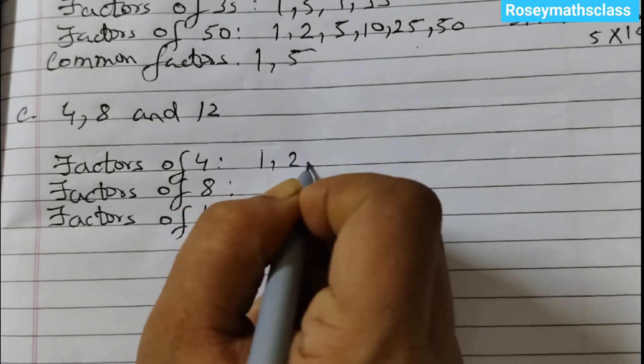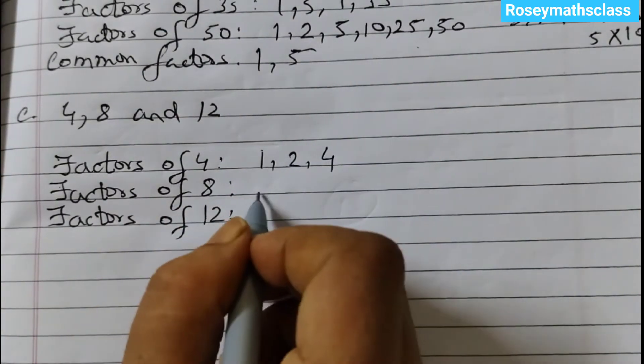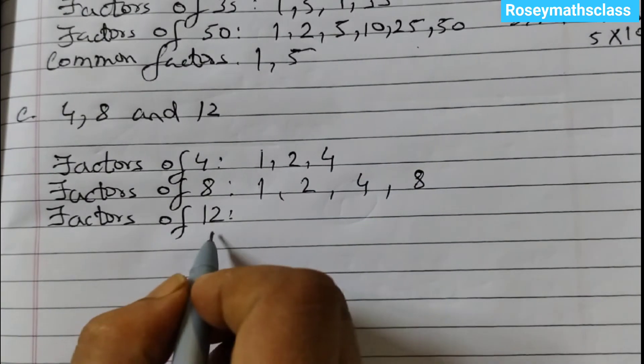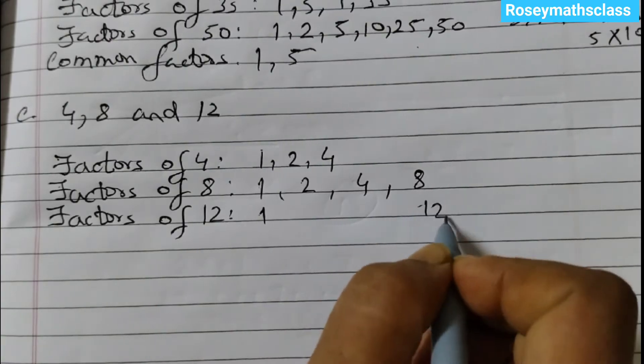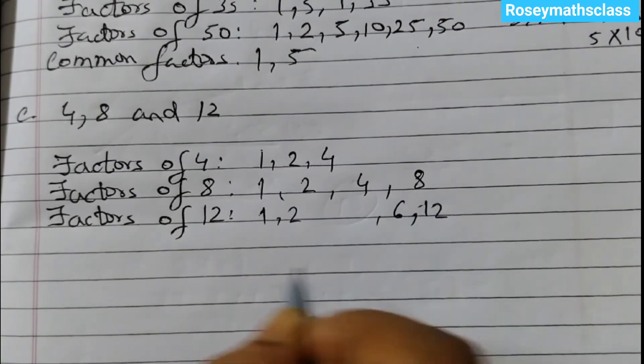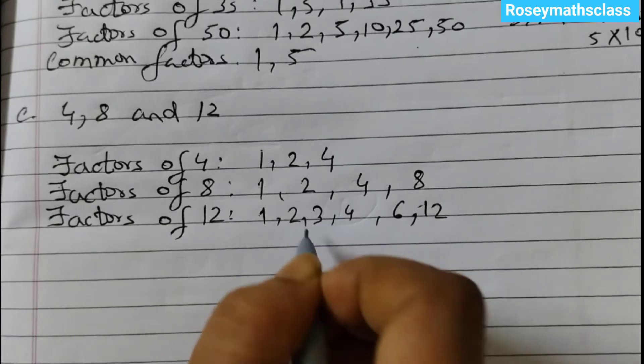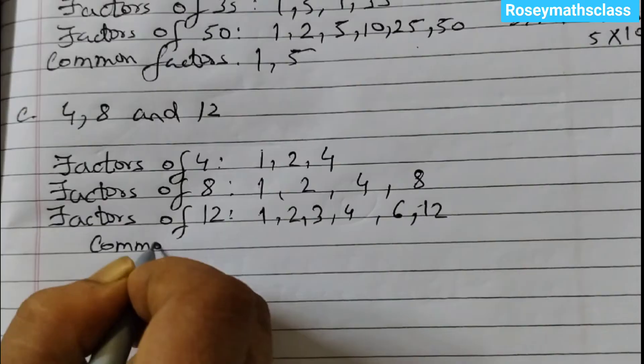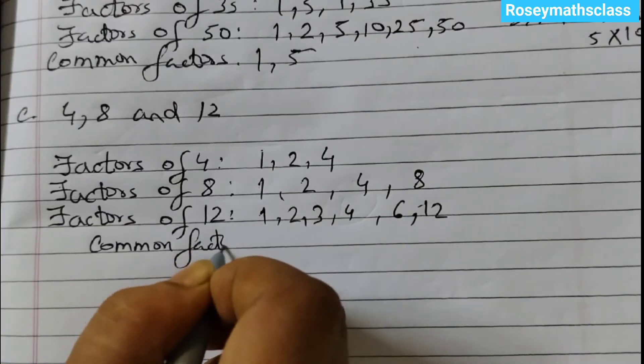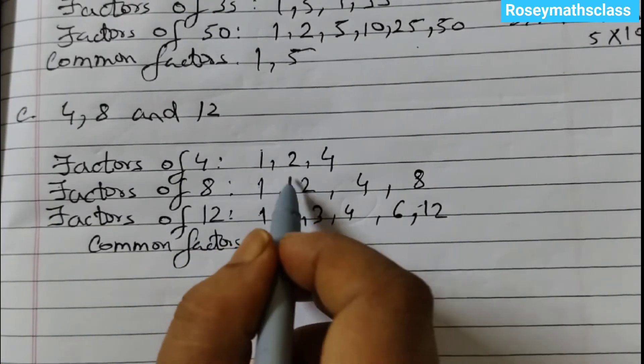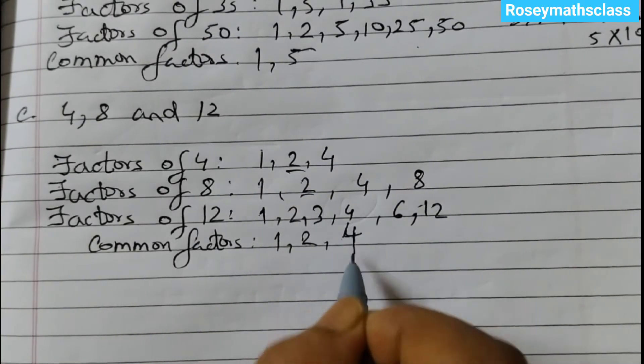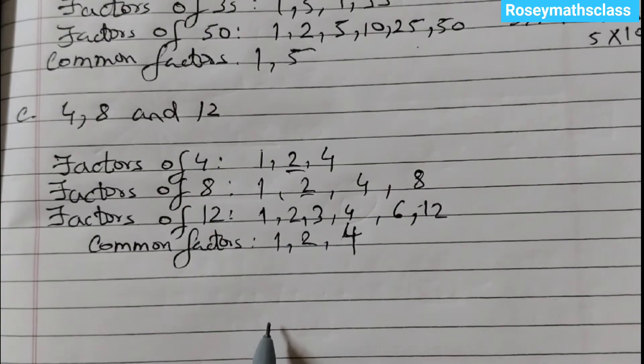Factors of 4 are 1, 2 and 4. Factors of 8: 1 into 8, 2 into 4. So 1, 2, 4, 8. Factors of 12: 1 into 12, 2 into 6, 3 into 4. So these are the factors of 12. Now we will see the common factors. Common factors are 1, 2 and 4. So the common factors of 4, 8 and 12 are 1, 2 and 4.